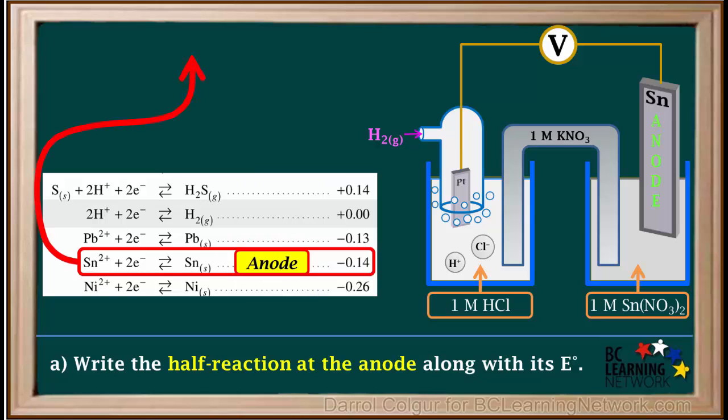Because the tin half reaction is the anode, oxidation is taking place, so the equation must be reversed. So it's written as Sn solid gives Sn²⁺ plus two electrons.